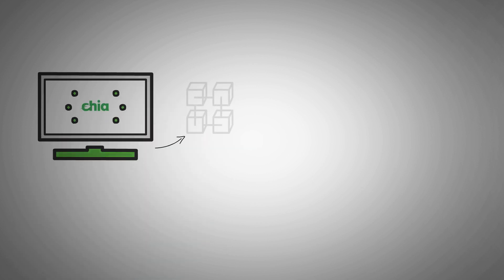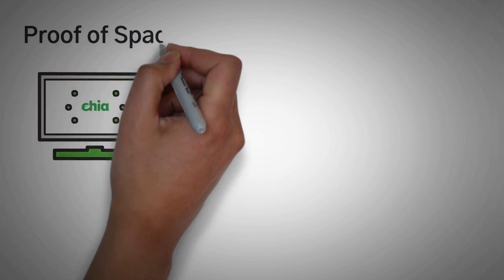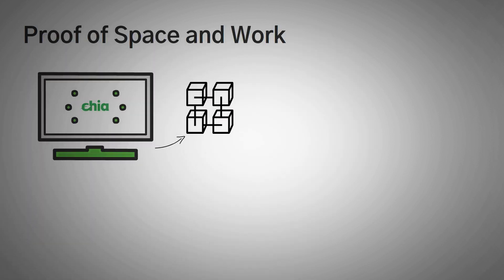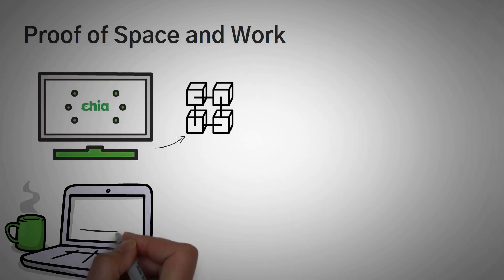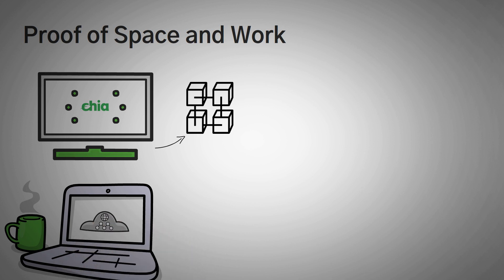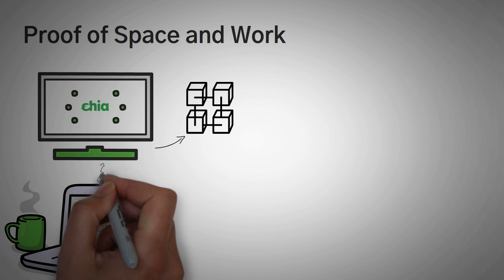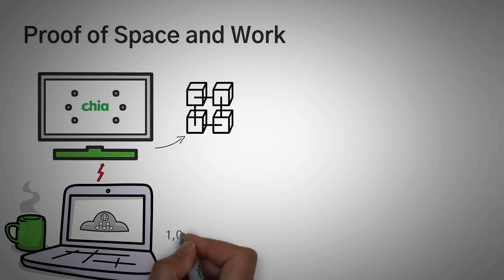Chia is a cryptocurrency using blockchain technology, and it uses what is called the proof of space and work consensus mechanism. In short, to farm anything using proof of space and work, you need to be able to hold large amounts of data, and then be able to provide that data to prove that you actually held it.